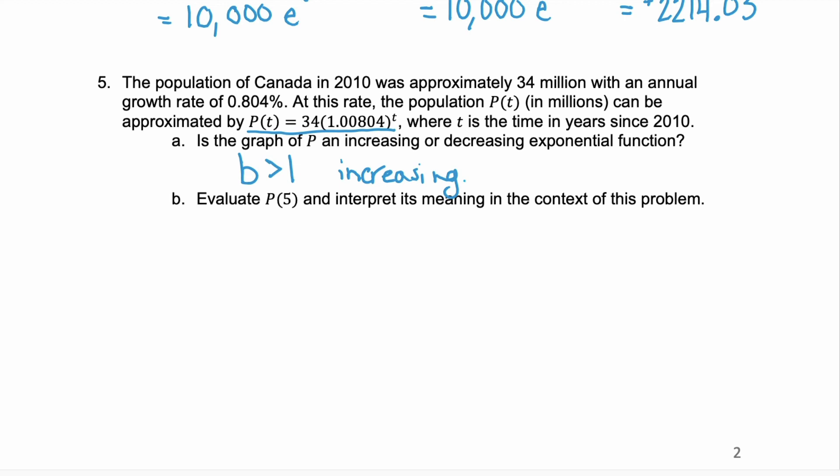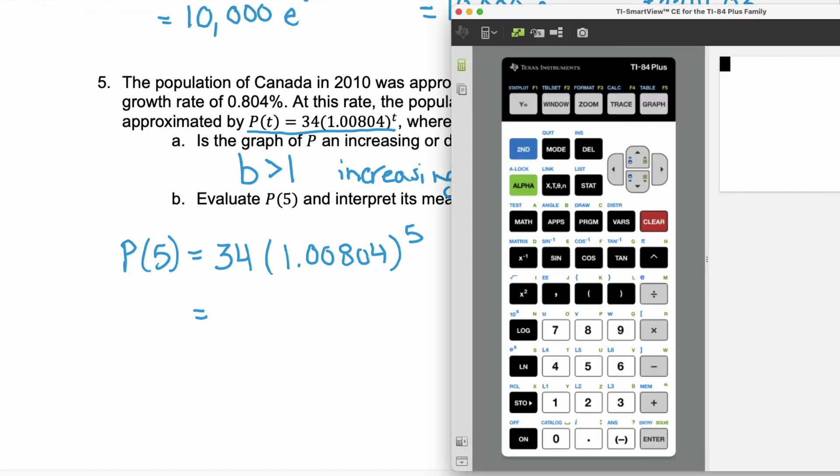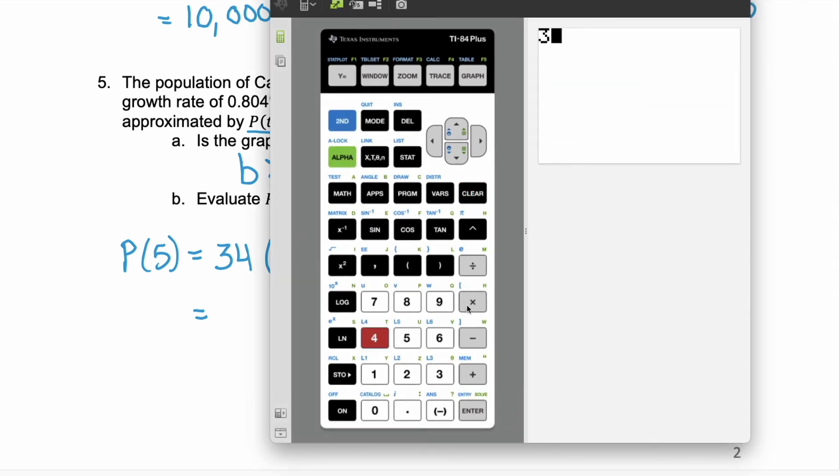In part B, we're asked to evaluate P(5) and interpret its meaning in the context of this problem. Let's set up our equation for P(5). P(5) is telling us to take our function and replace our variable t with the value 5. Now, this is a crazy base value to raise to the power of 5, so we're going to use our calculator. We have 34 times 1.00804, we're going to use that caret key to raise that to the power of 5. Hit enter, and we get 35.39.